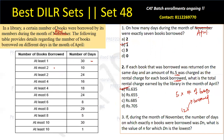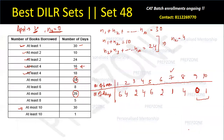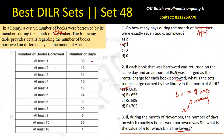Question 3: During the month of April, the number of days on which exactly n books were borrowed is dn. What is the value of n for which dn is the lowest? We need to find where the number of days is minimum. Looking at the table, the minimum value is 0, which occurs when 9 books were borrowed — but since 0 days might be excluded, the next minimum is 1, at n = 7 or n = 9. The answer is n = 9.